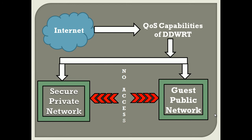Since the two networks are separate, we are reducing the security risks. By enabling the QoS capability of DD-WRT, we can prioritize the bandwidth allocation of the private and guest networks separately. This ensures optimal bandwidth performance for our private network.